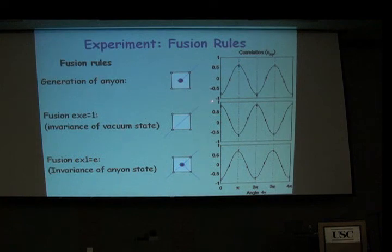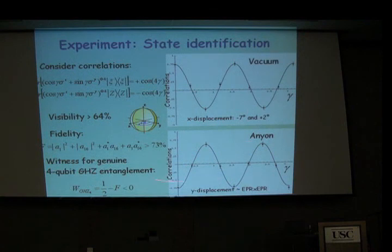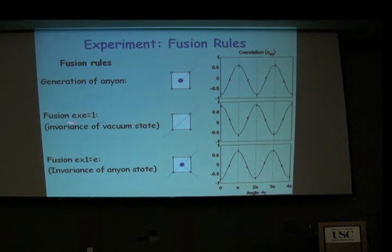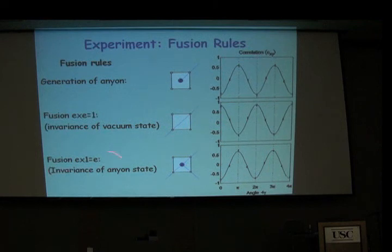If I generate an anion, you start from a negative value — so this is the anyonic state you recognize. This is the fusion rule: vacuum × anion = anion. A more non-trivial rule: if you have two anions generated in the same plaquette, you get the vacuum. Making two applications of Z here and there, you start from positive, go to negative, and end up with a vacuum state. Then the non-trivial fusion — where a string goes across and you generate another anion — gives again an anyonic state E.